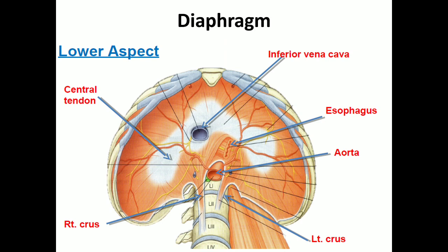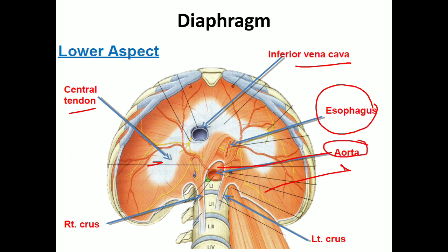In this diagram you can see the inferior aspect of the diaphragm. You can see the central tendon of the diaphragm, in which there is the inferior vena caval opening, the muscular part with the esophageal opening, and the aortic opening. The vena caval opening is at the level of T8, the esophageal opening at T10, and the aortic opening at T12.